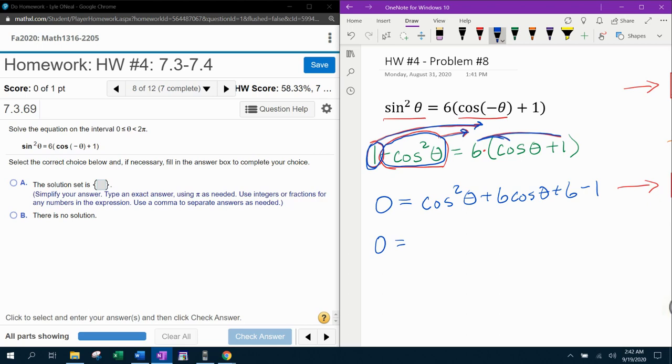Now that I have it equal to zero, I need to combine like terms. So I've got my cosine squared theta plus six cosine theta, and then here's my like terms that I need to combine. Six minus one is five.